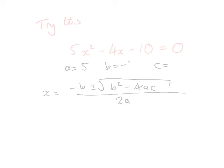So A is the number five, B is minus four, and C is negative ten. If we substitute those into our formula,